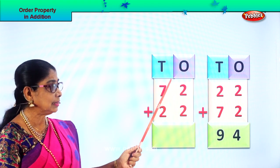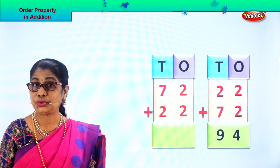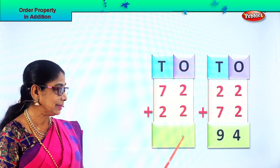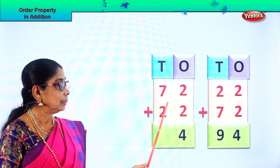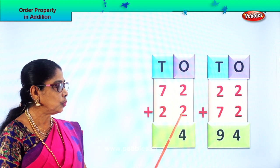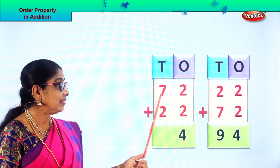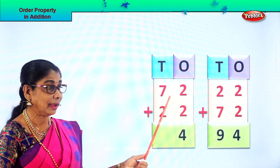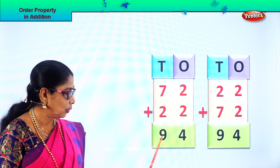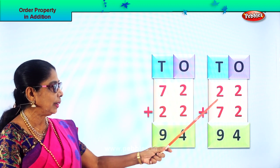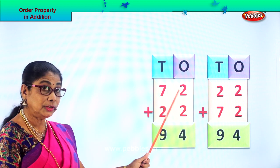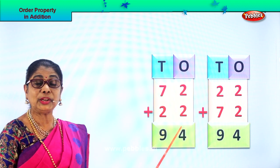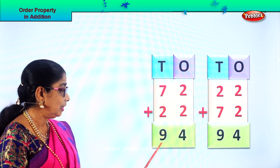Now let's add 72 plus 22. Add all the ones: 2 ones plus 2 ones — 2 plus 2 is 4 ones. Then 7 tens plus 2 tens — 7 in the mind, take 2 on your fingers. After 7: 8, 9 tens. So you get 94. Whether you add 22 plus 72 or 72 plus 22, your answer is the same: 94.